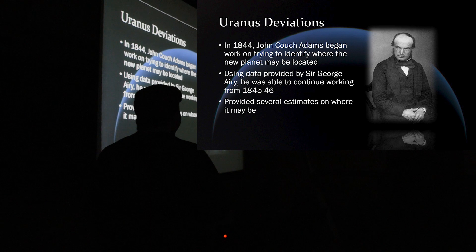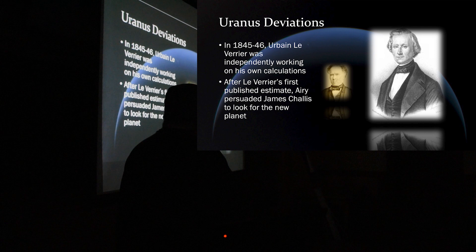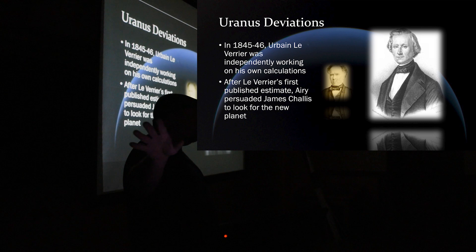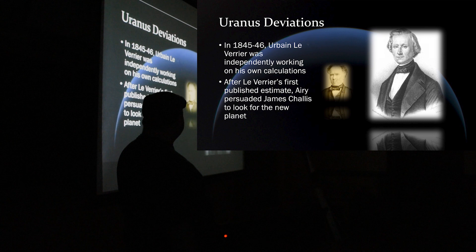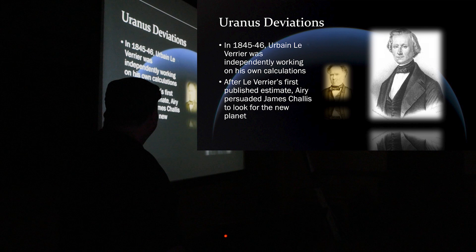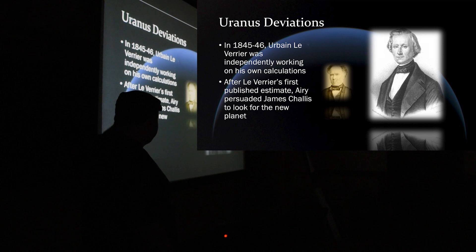At the same time, this French guy, Urbain Le Verrier, he was working independently on these same calculations, you know, without Adams' knowledge. And Adams didn't know that he was doing it. He didn't know Adams was doing it. As soon as the word was out, because Le Verrier published his estimates, Airy persuaded this astronomer here, his name is James Challis, to start looking for the new planet. So, the race was on.